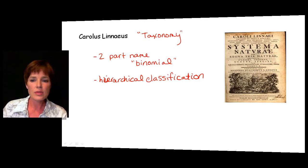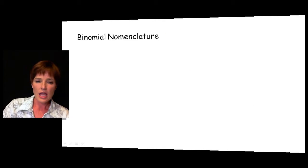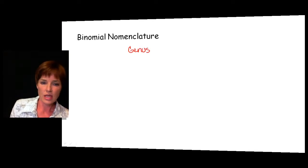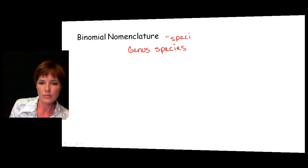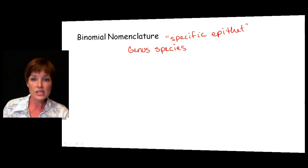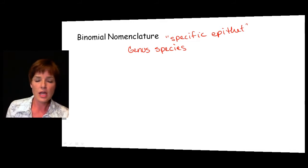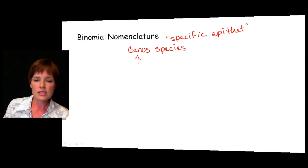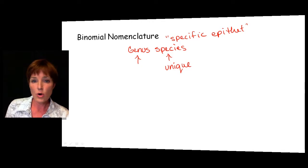Linnaeus published his taxonomy results in his work 'Systema Naturae.' Binomial nomenclature has a genus and a species — the species part is what we call the specific epithet. What Linnaeus said was that all organisms are going to have these two-part names. Many organisms may share the same genus, but the specific epithet is unique, so when you take this combination you will only have one species with that two-part combination.